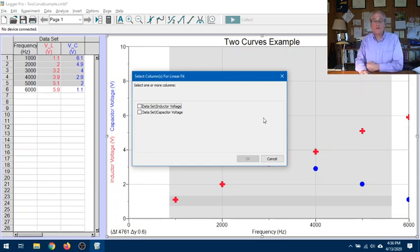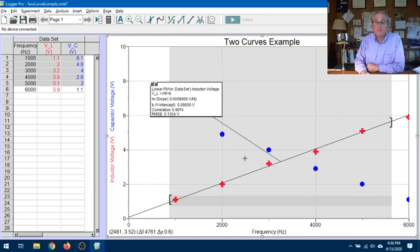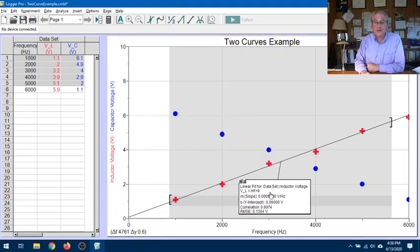And it asks, which one of these two do you want? So I will fit to the first column, the inductor column. Boom. Got my graph. Got my straight line. And I can move this out of the way.